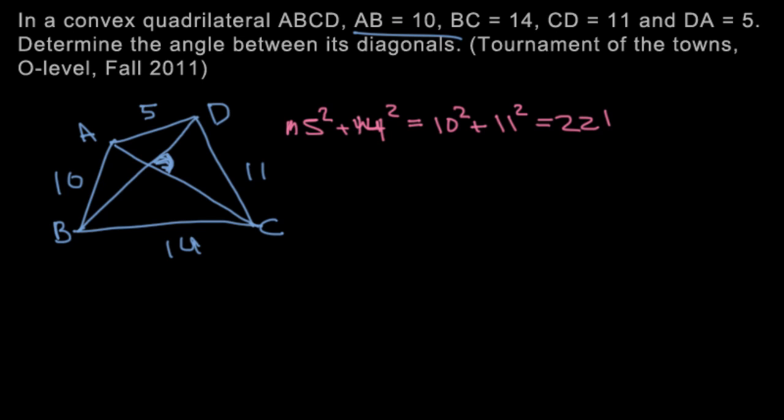So we're going to tackle this problem by looking for a contradiction. And let's assume that if we call this O, let's assume that angle DOC, which is equal to angle AOB, is less than 90 degrees.